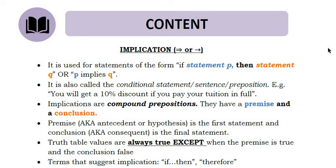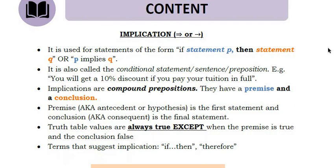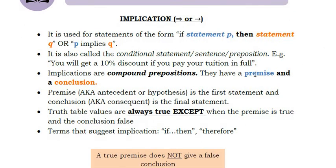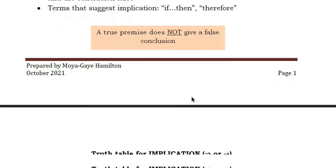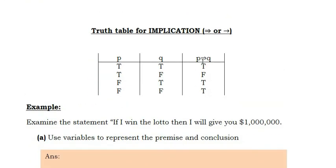Basically, implications are if-then statements — another type of compound proposition. The first variable is considered the premise and the second variable is the conclusion. The section before the arrow is called the premise and the section after the arrow is called the conclusion. The truth table for implication: if the premise is true and the conclusion is false, it is false; otherwise it's true all around.